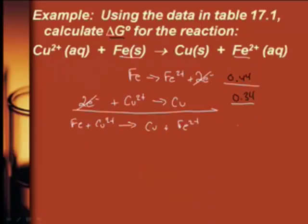So that is 0.78 volts total. Now we're going to use this equation: delta G equals negative N times F times E naught.